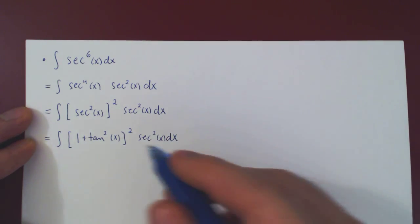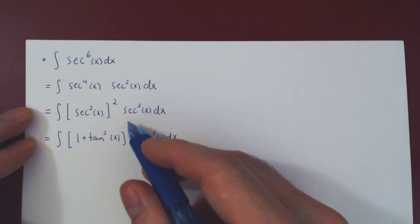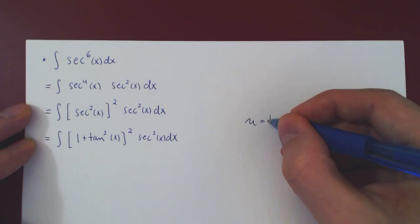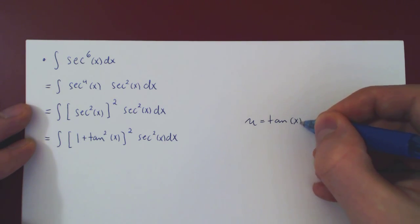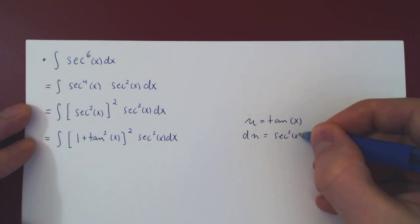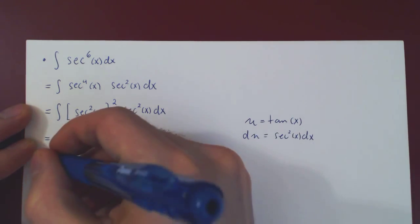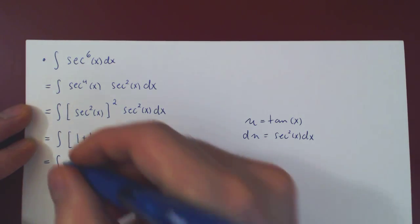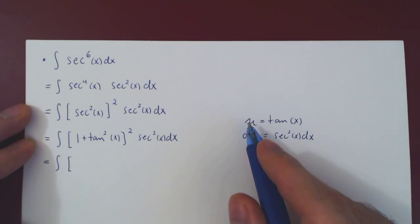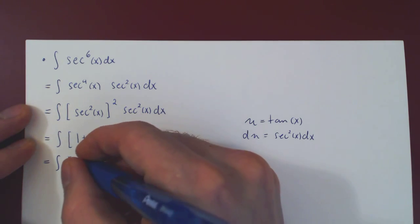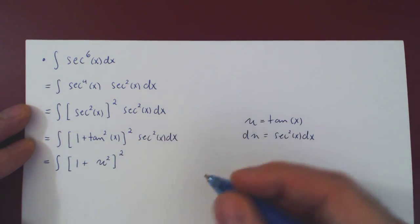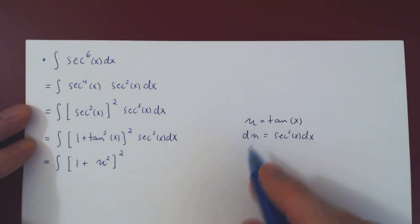Now we can make our u substitution. As everything is a function of tangent times secant squared of x, this is the perfect setup for a u substitution, letting u be tangent of x. So the differential du will be secant squared of x dx. The integral becomes that of a simple polynomial. One plus tangent squared is one plus u squared, all squared, times secant squared of x dx, which is simply du.